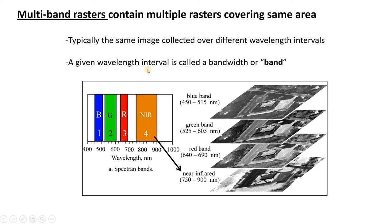In this example, there are four rasters covering the exact same footprint of ground with the same number and size of pixels, but they're each storing different data. The top one stores information about light collected in the blue wavelength, then green, red, and infrared. So we took one picture in four different wavelengths and stored that into four different rasters, usually packaged into a single file. We'll call each of these rasters a band.